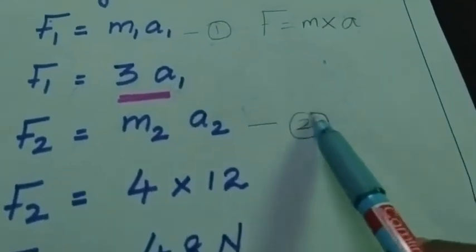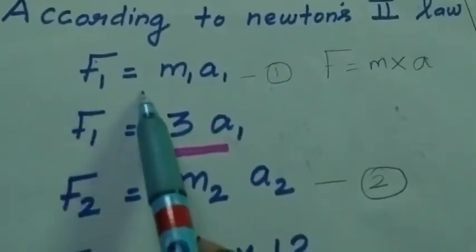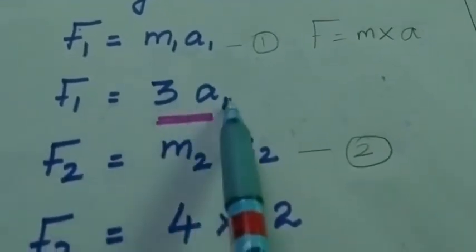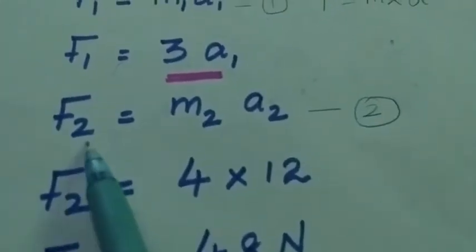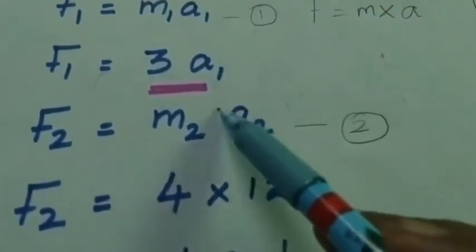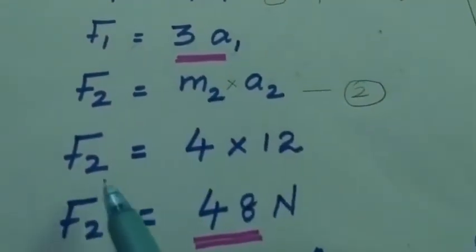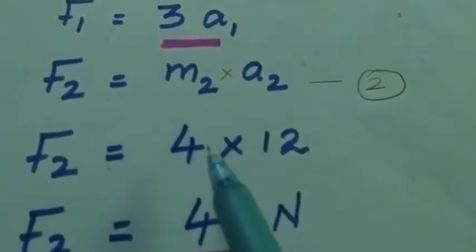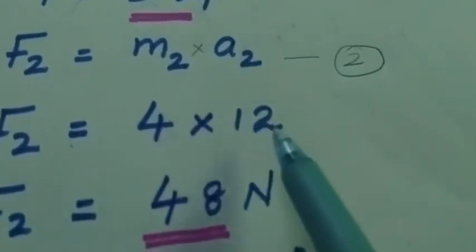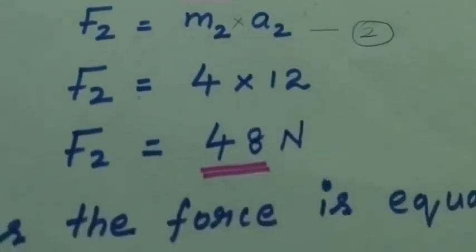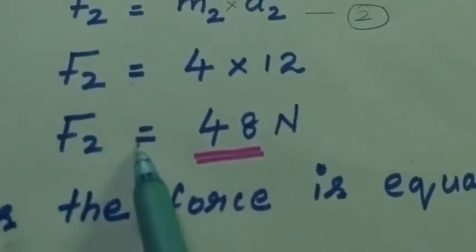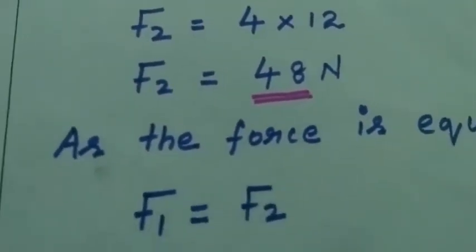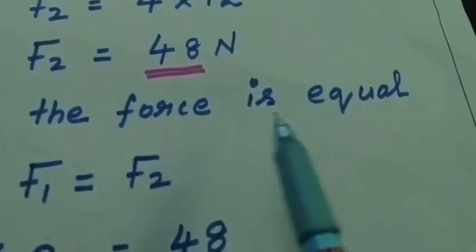And then f2 equal to m2 into a2. That is the second equation. So f2 equal to — we know the mass of the second object — 4 into acceleration 12 meter per second square. So f2 equal to 48 newton. We know that the forces are equal.